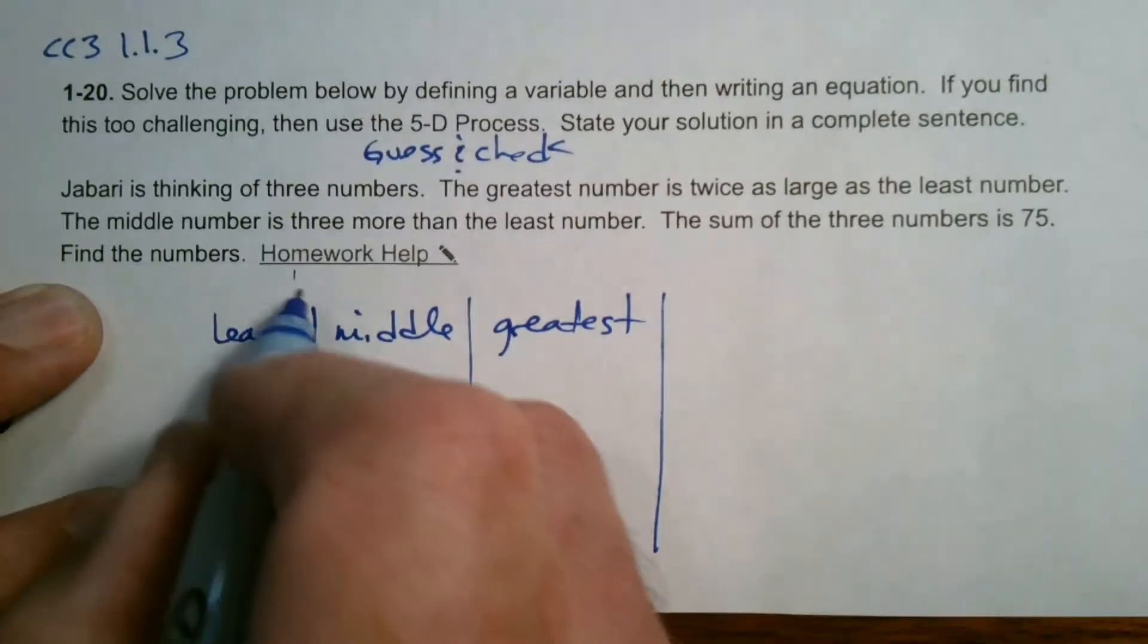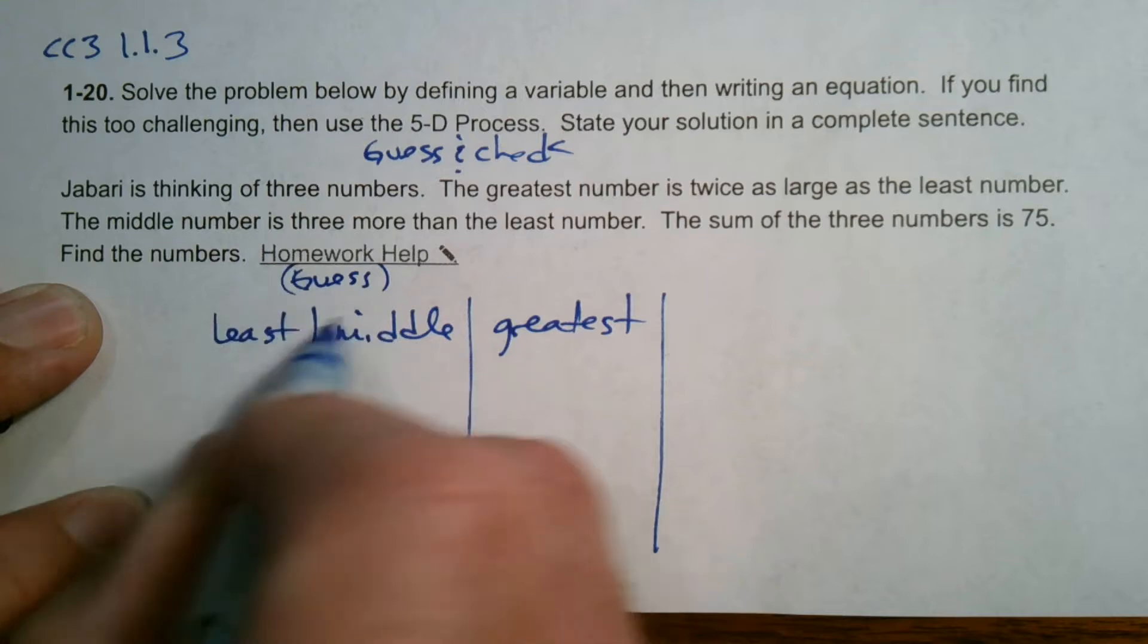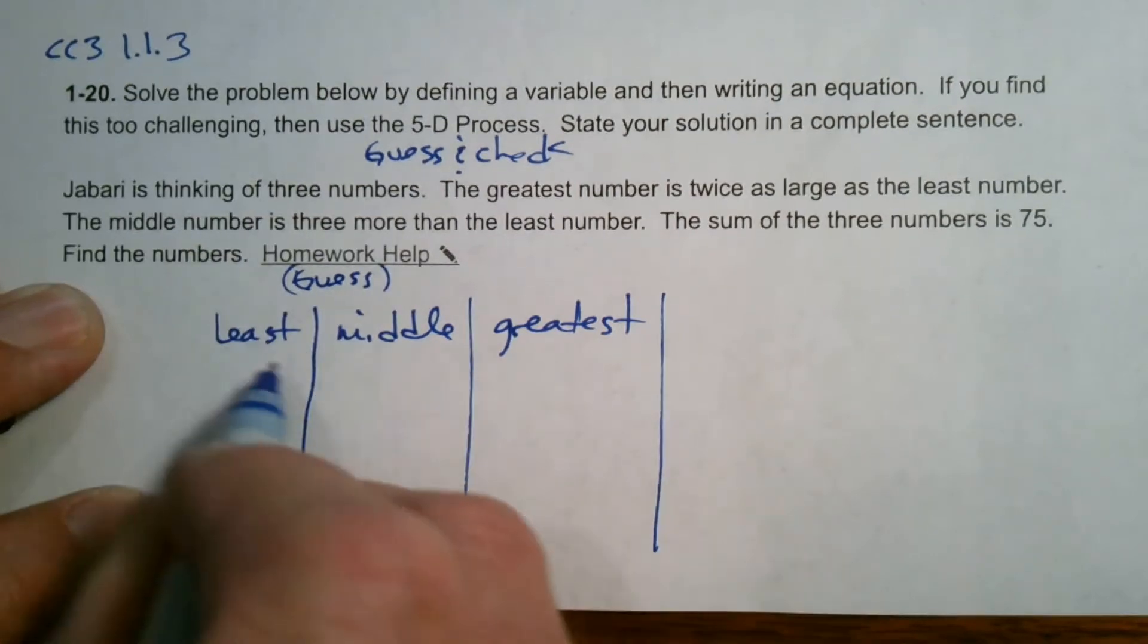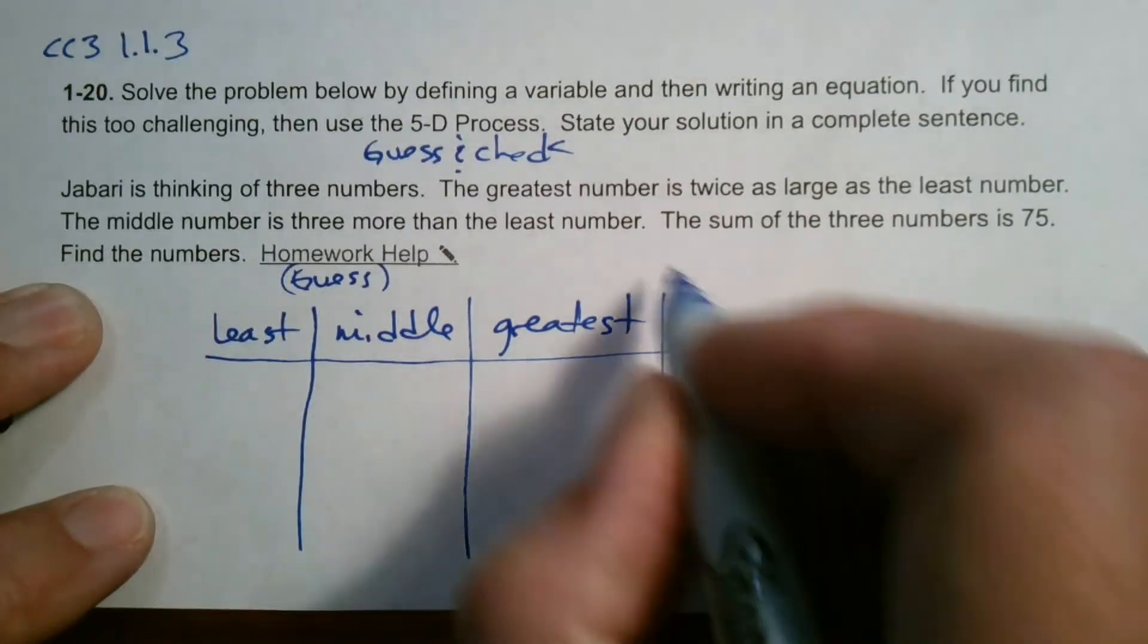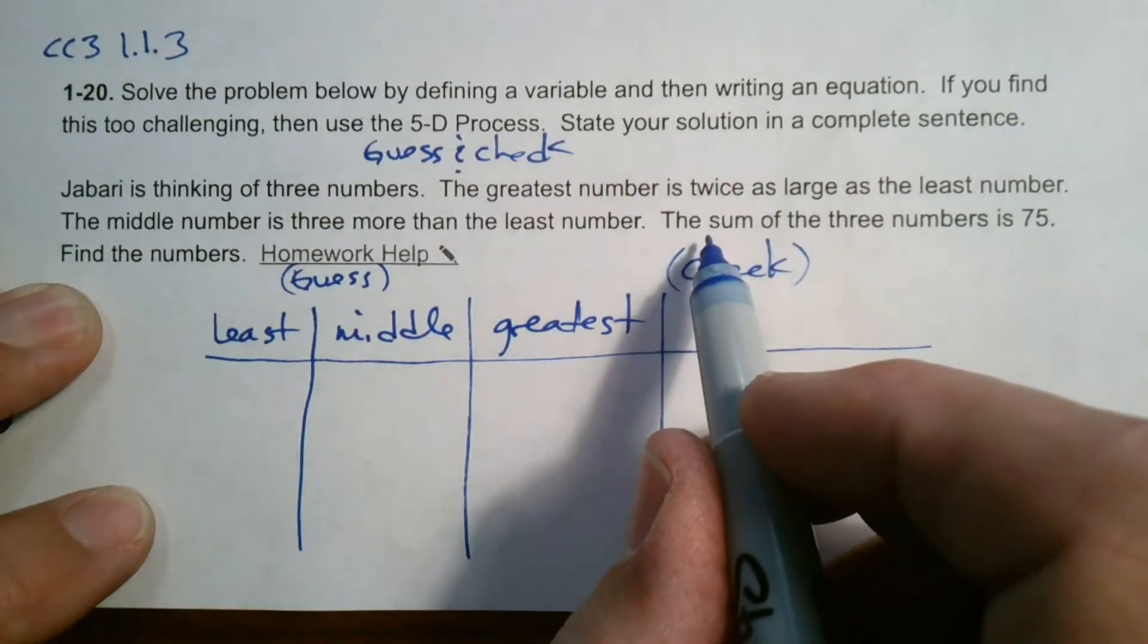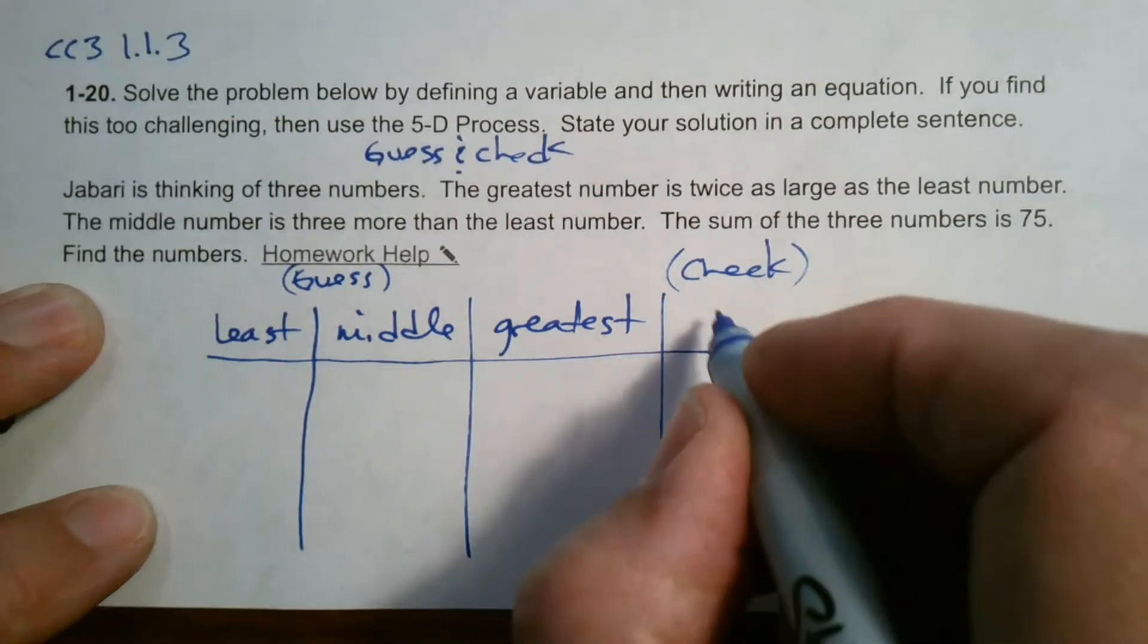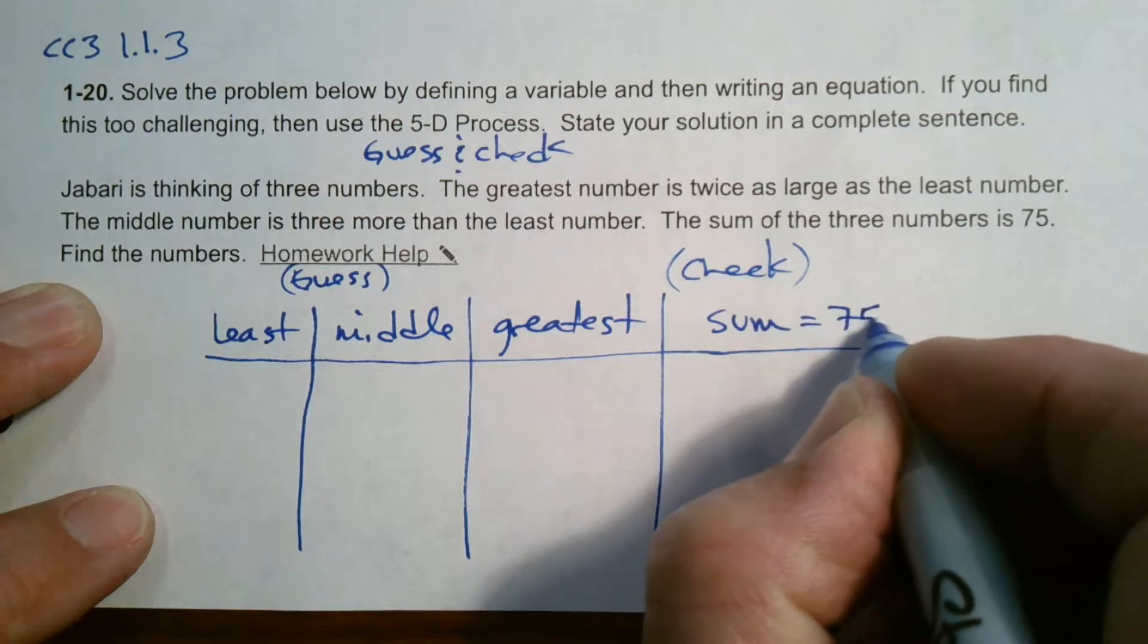This is our guess part where we start with the guess and do some math with those numbers. Our check is where it says the sum of the three numbers is 75. So sum equals 75, that's our check.